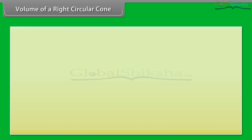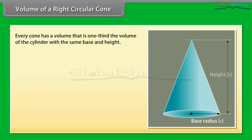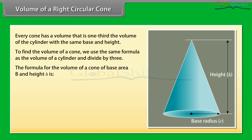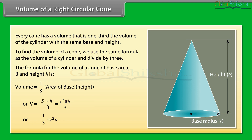Volume of a right circular cone. Every cone has a volume that is one third the volume of the cylinder with the same base and height. To find the volume of a cone, we use the same formula as the volume of a cylinder and divide by 3. The formula for the volume of a cone of base area b and height h is: volume equals 1 upon 3 into area of base into height, or V equals (b into h) / 3 equals (r² × pi × h) / 3, or 1/3 pi r square h.